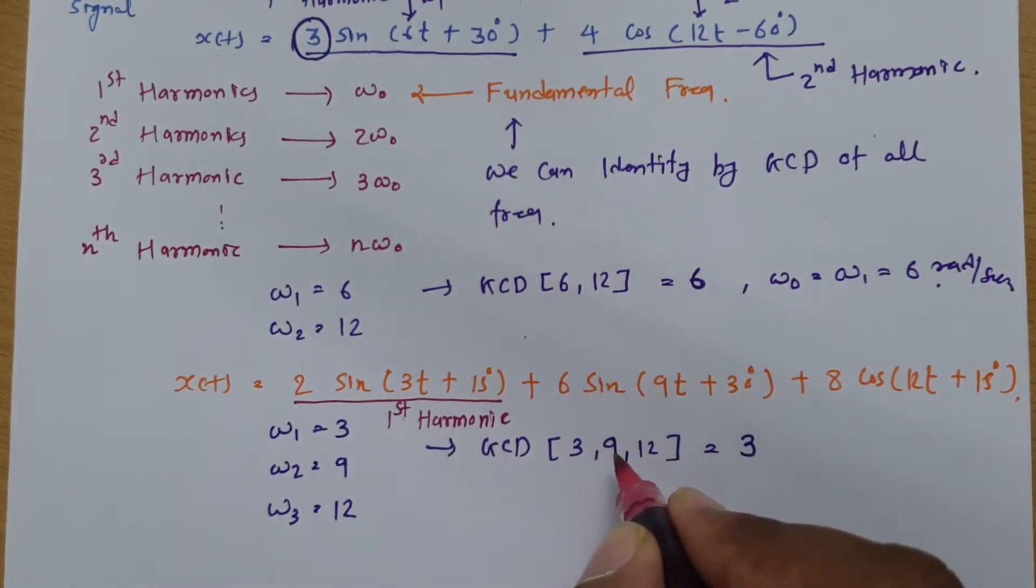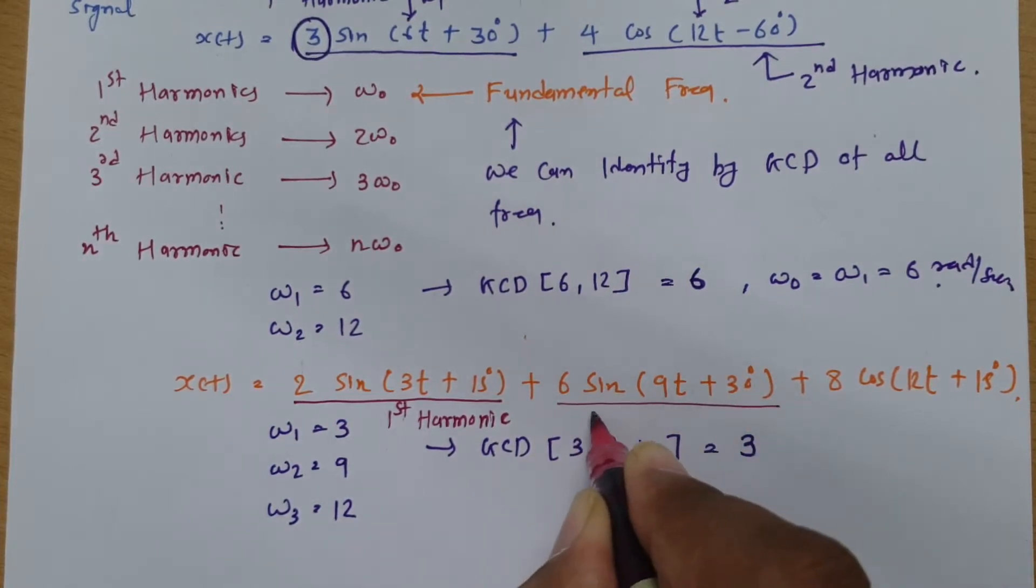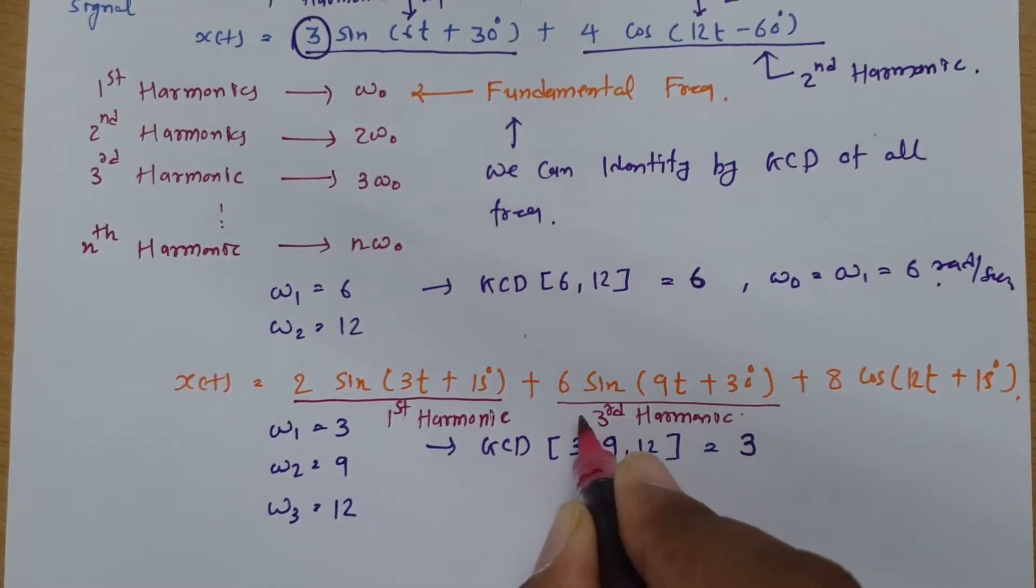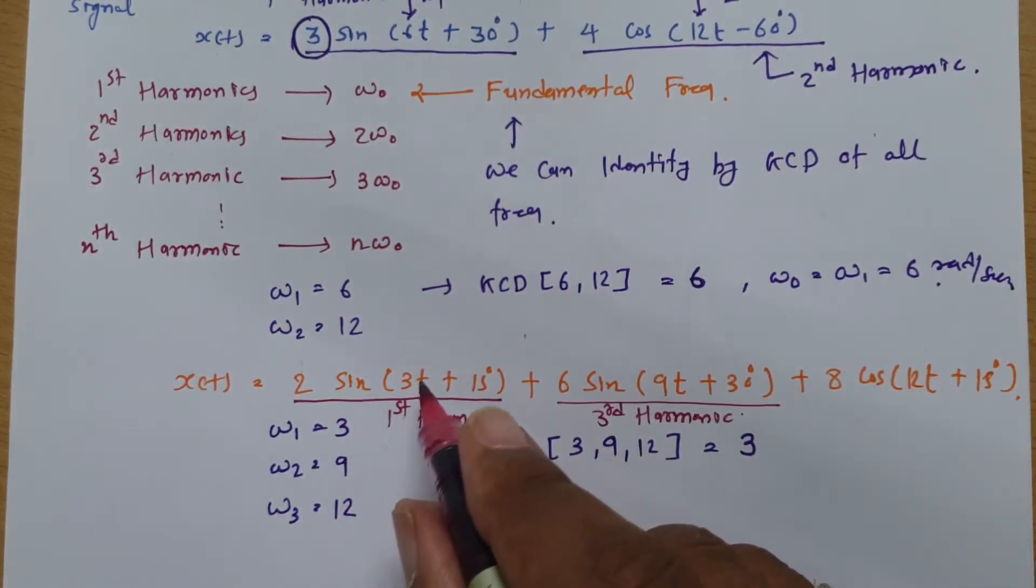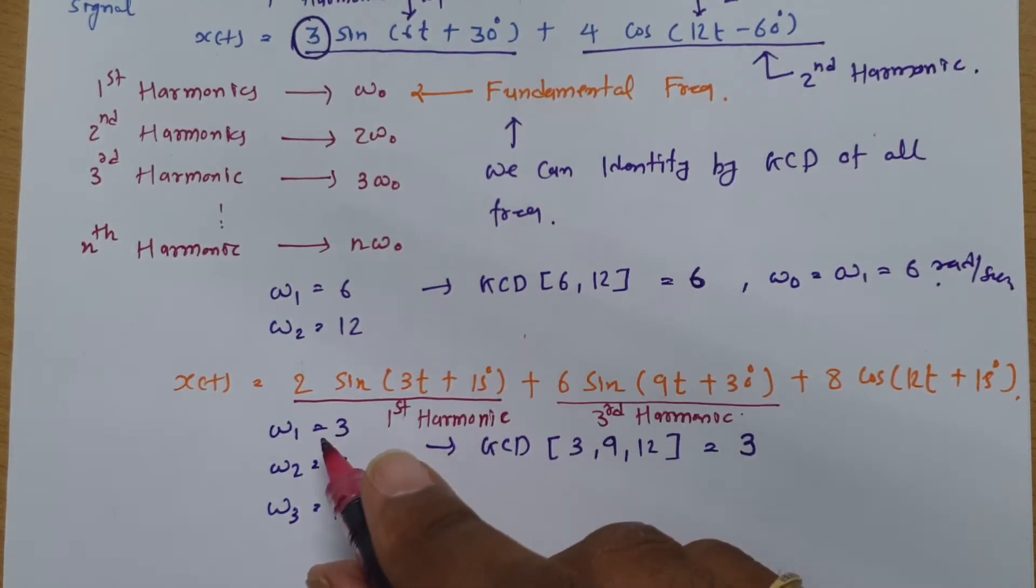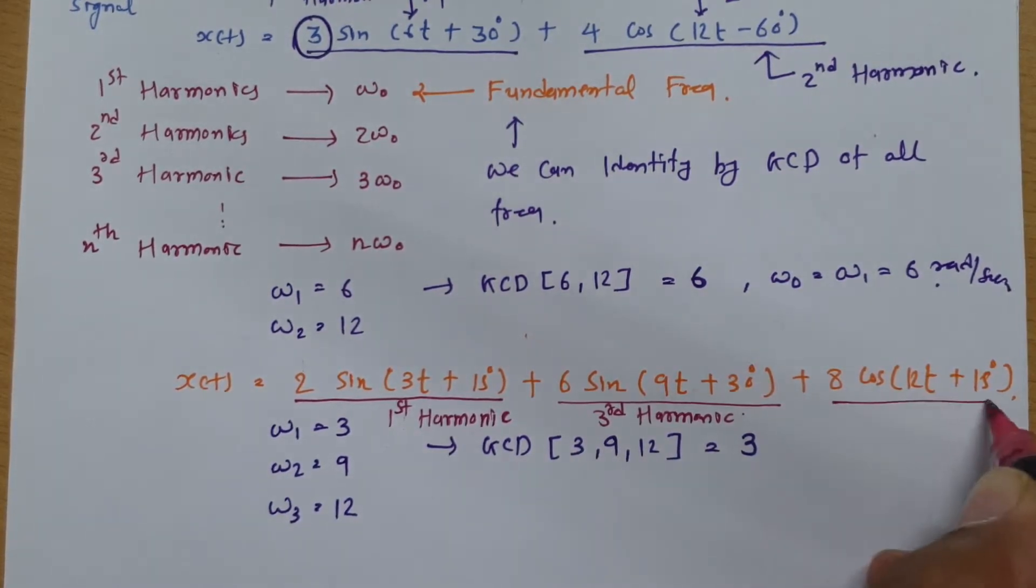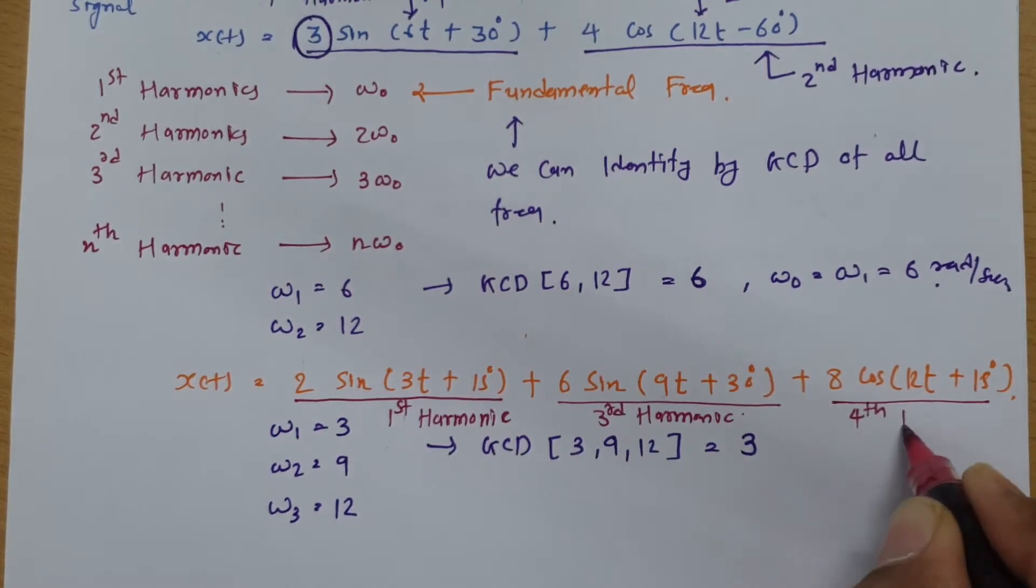Now see next harmonic. That has to be at 6. Right? And here it is 9. So this is what third harmonic. It is not second harmonic. So this is third harmonic. As second harmonic is not present. Second harmonic has to be at 2 into omega_0. Here omega_0 is 3. So this is third harmonic. So this is third harmonic. And one should understand this is. If you divide this 12 by omega_0. So 12 by 3. That is 4. Means this is fourth harmonic.